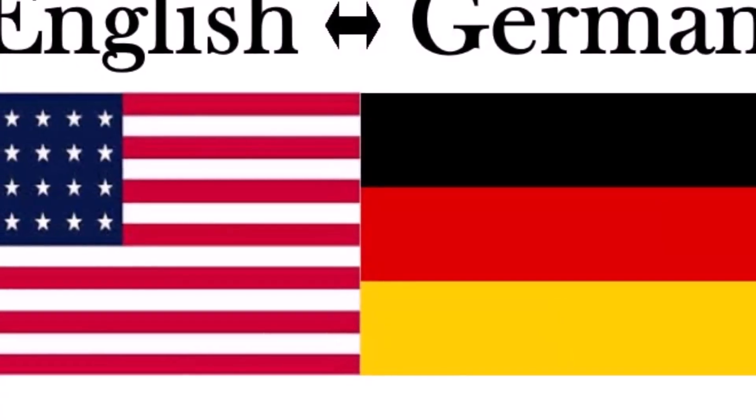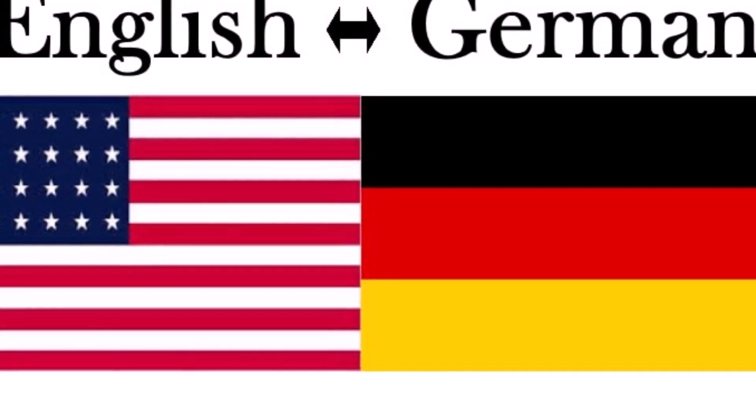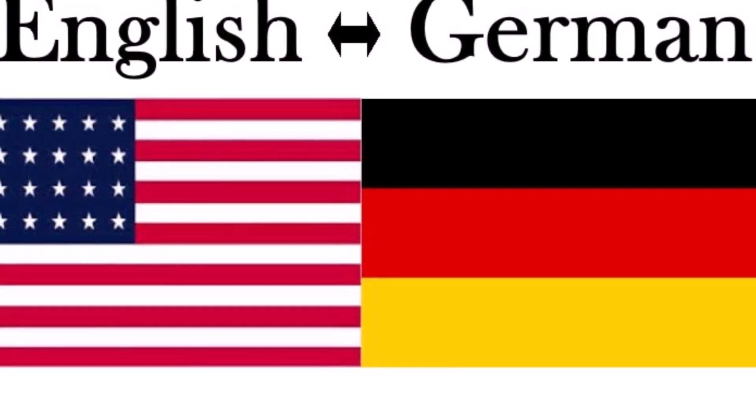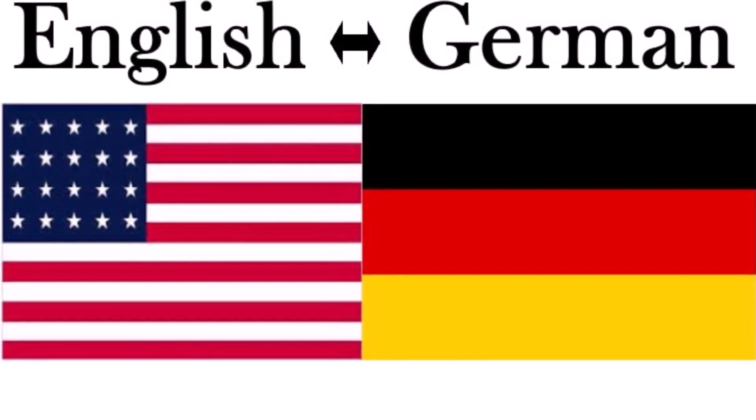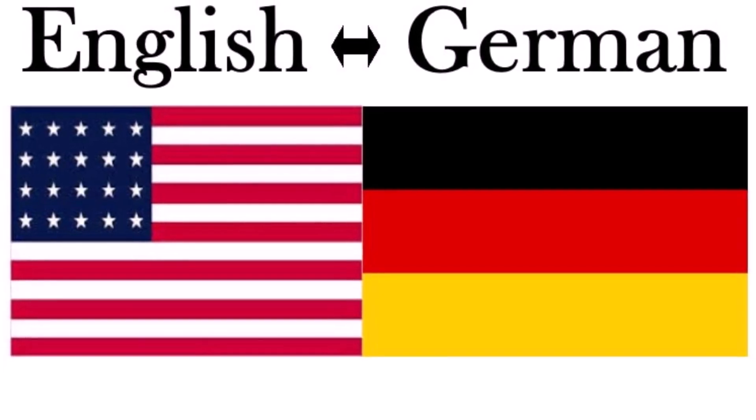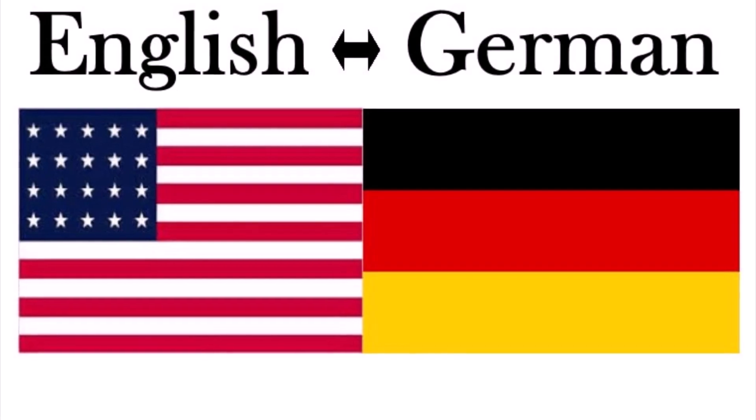He asked the participants to pay attention to a particular message and then repeat back what they had heard. He discovered that the participants were able to easily pay attention to one message and repeat it, but when they were asked about the contents of the other message, they were unable to say anything about it. Cherry found that when he suddenly switched the contents of the unattended message — such as changing from English to German mid-message or suddenly playing it backward — very few of the participants even noticed.